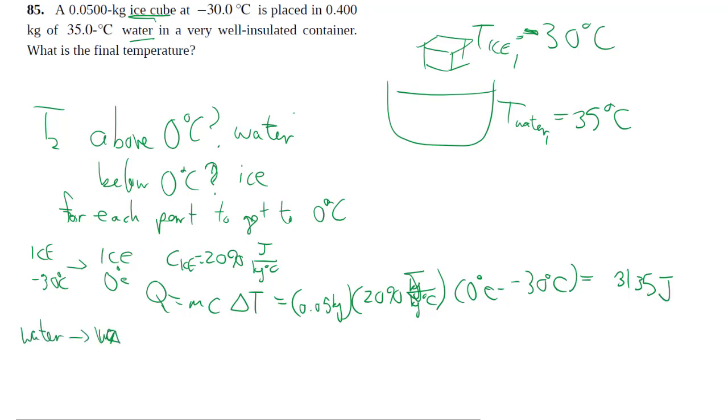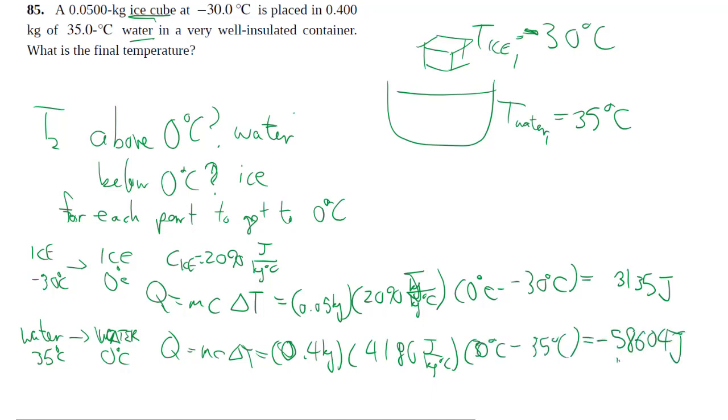And conversely, to change 35 degrees water into zero degrees water, in this case you do get a negative because that is heat loss in the water. Clearly, there's a lot more energy in the water to make up to raise for the ice. And so now we know that it's the ice that's going to come towards the zero degrees.